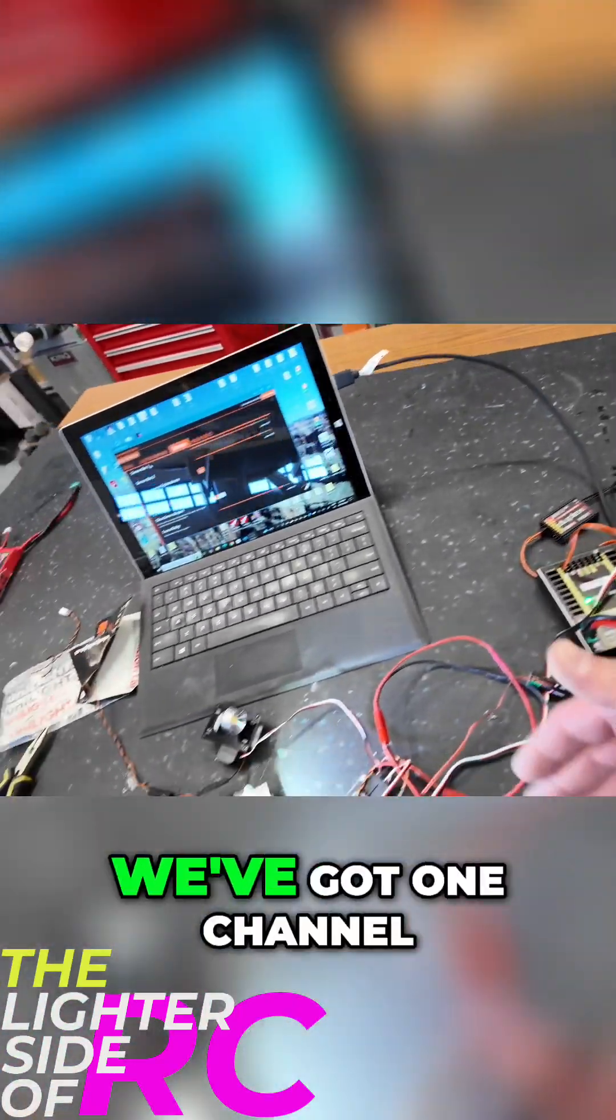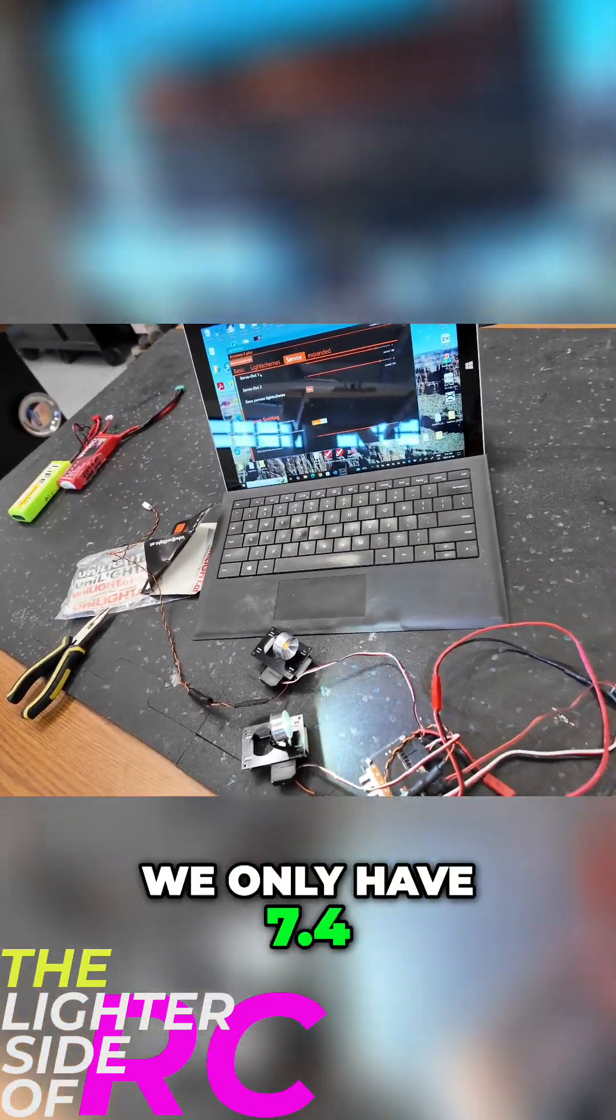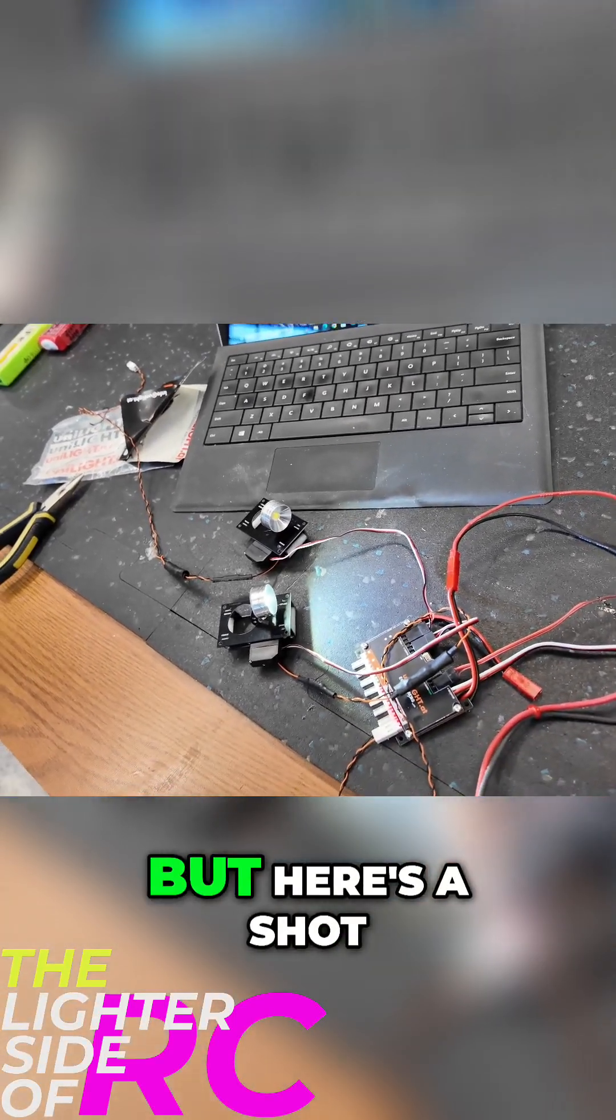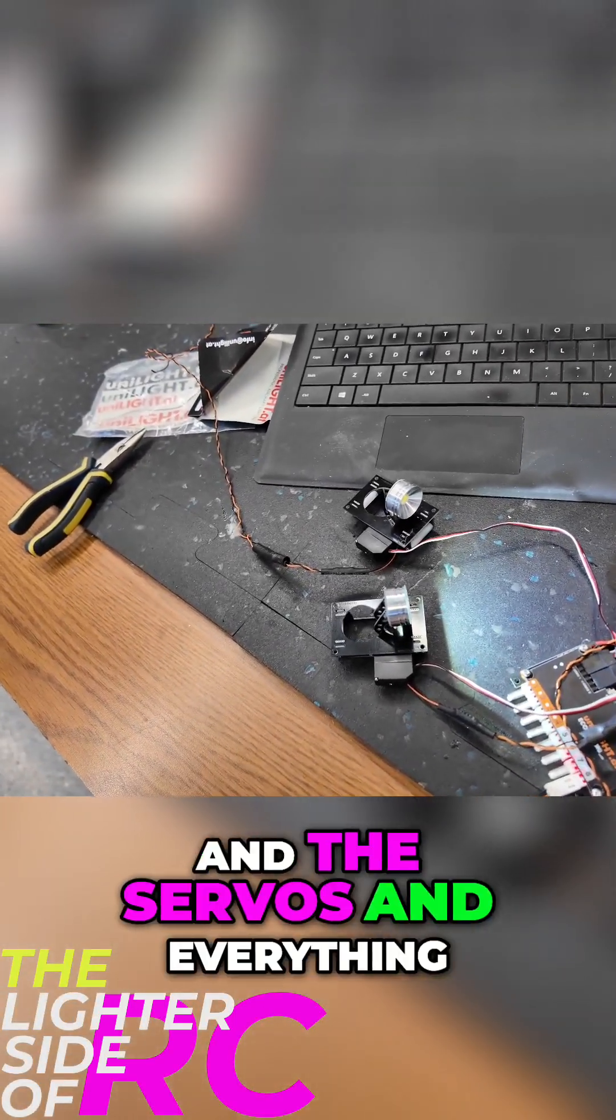So right now we've got it plugged into the radio. We've got one channel hooked up. We only have 7.4 volts going through it, but here's a shot of the lights and the servos and everything.